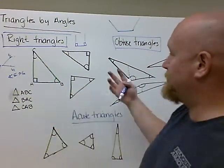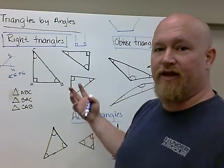So right triangles, obtuse triangles, they only have one of their special angle.